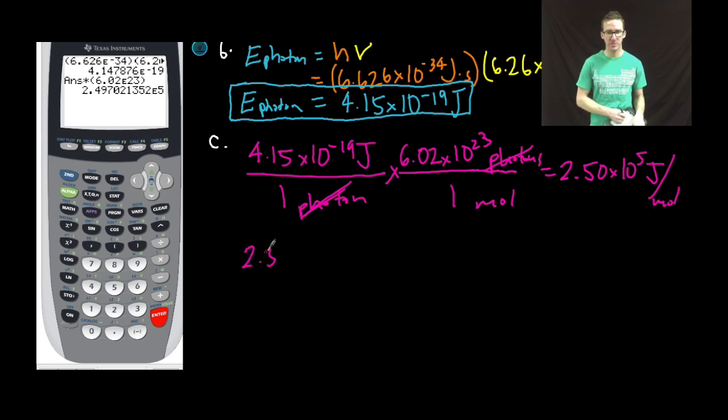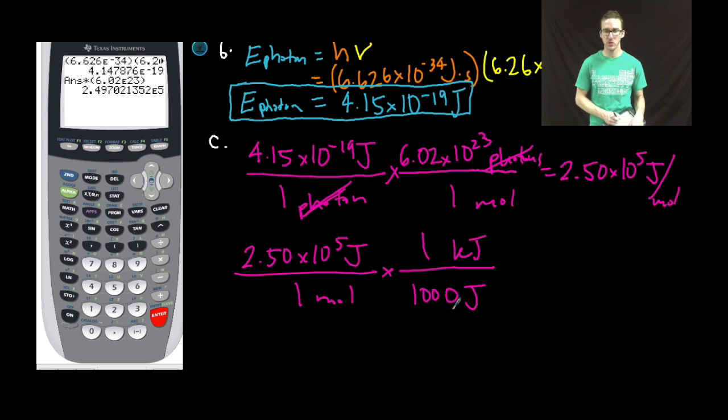2.50 times 10 to the 5 joules per one mole times, this time I'm going to set up a conversion factor that will get joules to cancel out and leave me with kilojoules. In one kilojoule, there are 1,000 joules. Cancel, cancel. Back to the calculator.